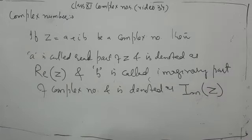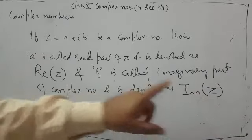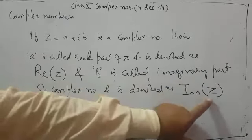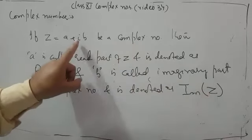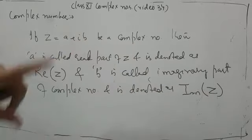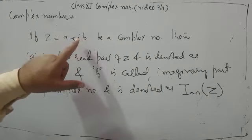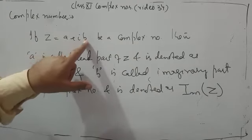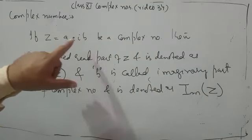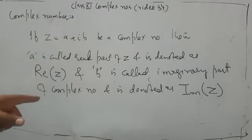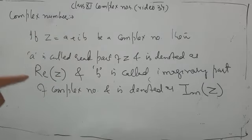Re(z) is written like this; Im(z) is the part written with iota. 'a' and 'b' are both real numbers, but the part written with iota is called the imaginary part. The part without iota is called the real part. This is the introduction to complex numbers.